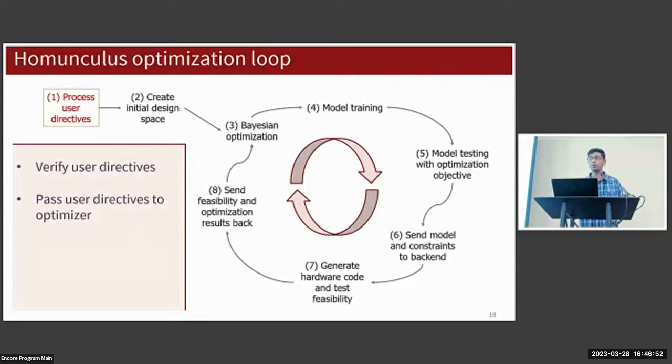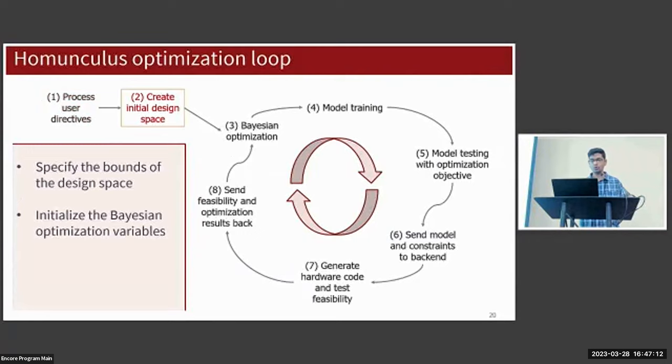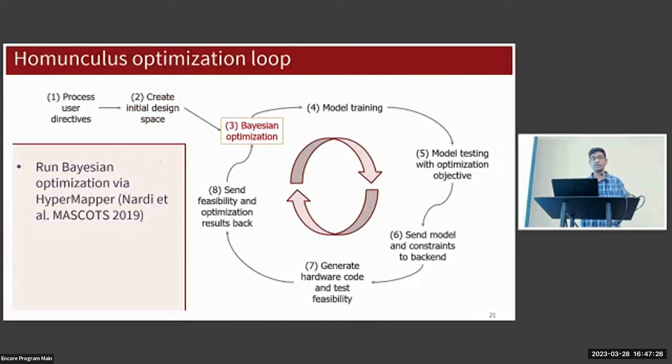Now we'll look at the full optimization loop in detail and how exactly it incorporates Bayesian optimization. We'll start at step one on the left here where the user has expressed their data plane ML models via Alchemy. Homunculus first verifies that the user-specified algorithms and platforms are supported before starting the actual optimizer. Next, based on the algorithms requested by the user, Homunculus is going to create a design space and initialize the Bayesian optimization variables. For DNNs these variables could include the number of layers or the number of neurons in a layer.